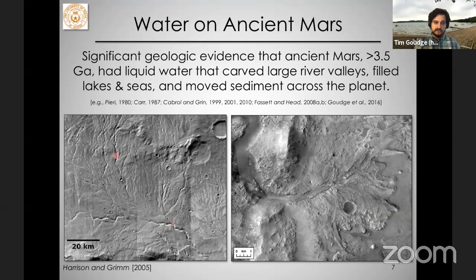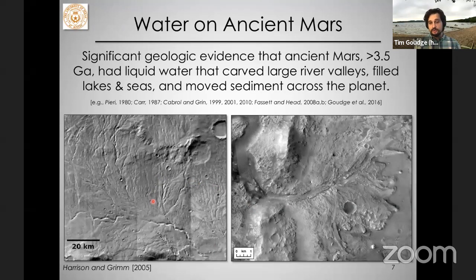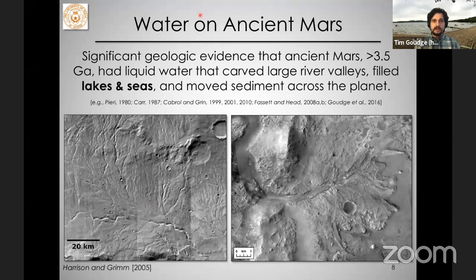Here's a system of river valleys all flowing together, much like we see dendritic river valleys on Earth. These valleys moved sediment across the landscape and formed sedimentary rock and deposits. This is an example of a delta deposit within Jezero Crater that I'll return to at the end of the talk. We also see evidence of large bodies of standing water — lakes or seas on the planet.